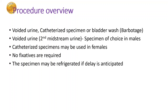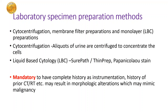Taking an overview of the procedure: we get various types of urine samples, but when we talk about the Paris classification we have voided urine samples, catheterized samples, or bladder washes — also called barbotage specimens. For voided urine, the first morning sample is not what is important; we need to examine the second midstream urine sample from patients, and this is the specimen of choice in males. Catheterized samples may be used in women. No fixatives are required if we are going to examine the specimens immediately; if we anticipate a delay, the specimen may be refrigerated.